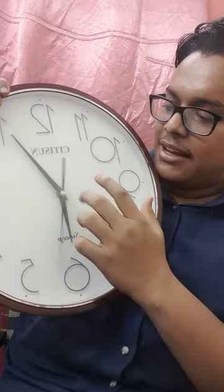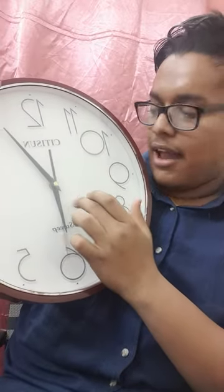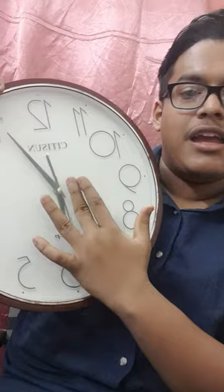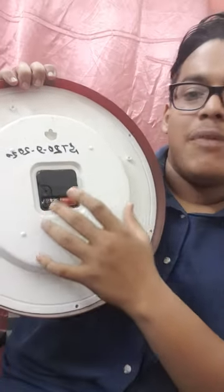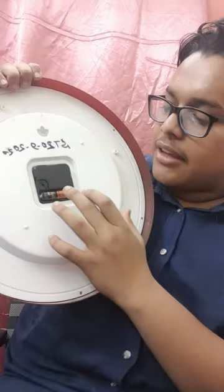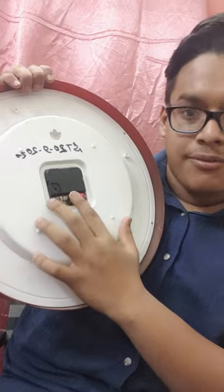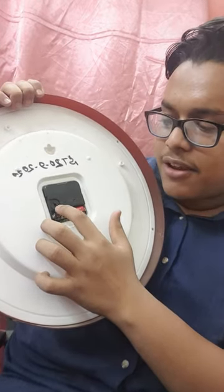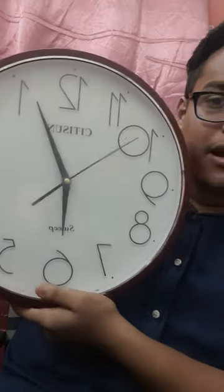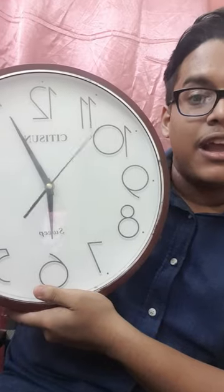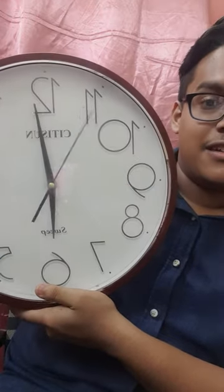This clock is covered by a plastic element to protect the inner surface. When we turn it over, the back is covered by white plastic. It is usually run by a battery. It has a round knob on the back through which we can change the time if needed.